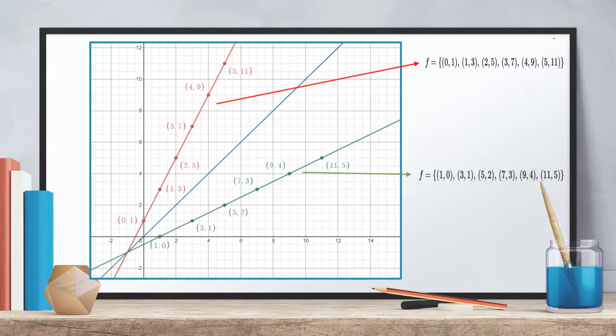On the other hand, this is the graph of the inverse of the original function. Notice that the graph of the inverse is actually a mirror image of the original function with respect to the line y is equal to x.